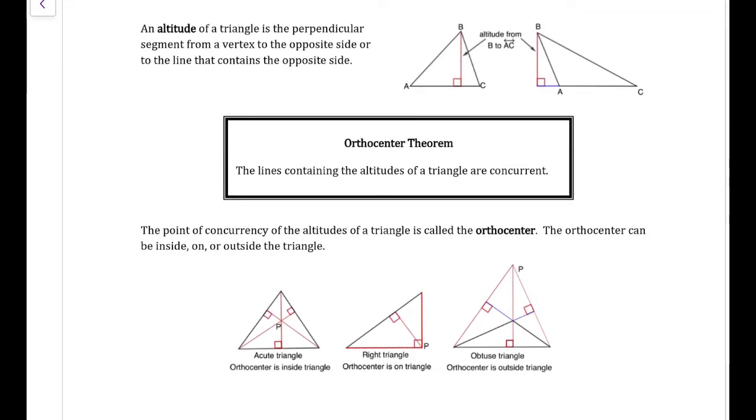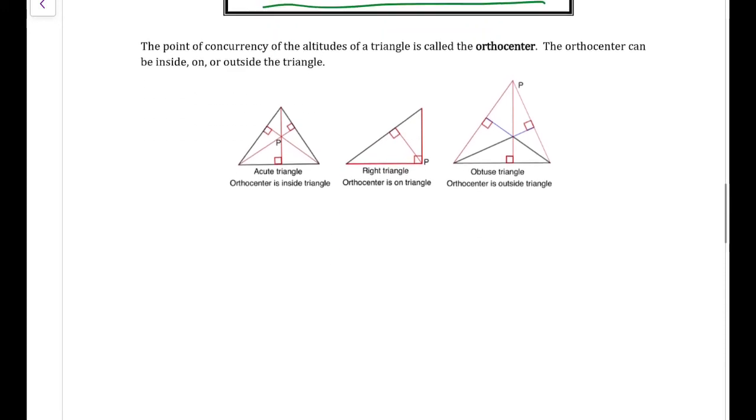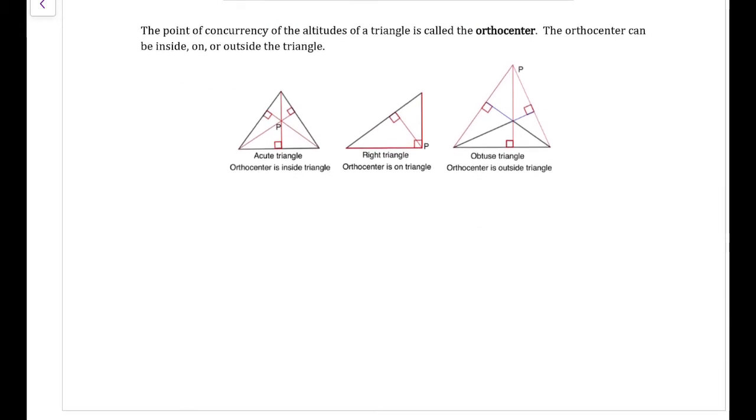The third one that we're going to use is our altitudes. Altitudes are a perpendicular side from the vertex to the opposite side. Now, this is going to be called the orthocenter. I like to think of ortho, like orthodontists. Orthodontists like to make our teeth straight and at 90 degree angles.